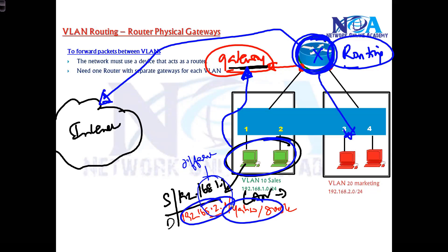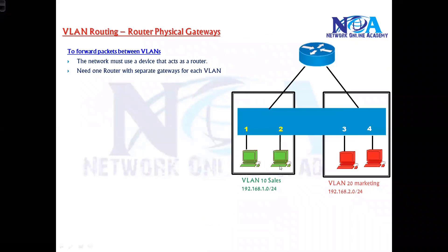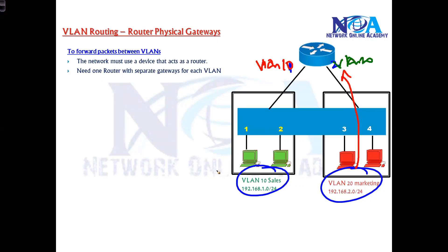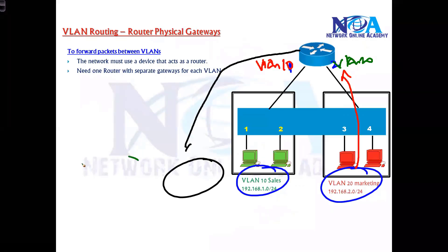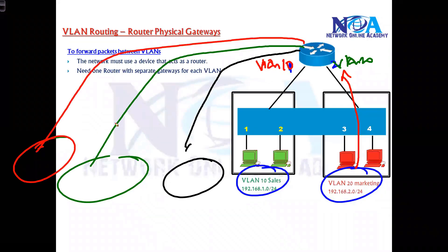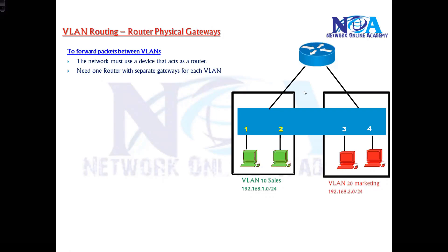We'll cover routing concepts in more depth in a dedicated routing section of the course. For now, the key point is: we need one gateway per VLAN. With two VLANs we need two gateways; with three VLANs, three gateways; with four, four gateways — and so on. This is the main drawback, because one router with that many physical interfaces is not a scalable solution, which is why this method is mostly not used in practice.